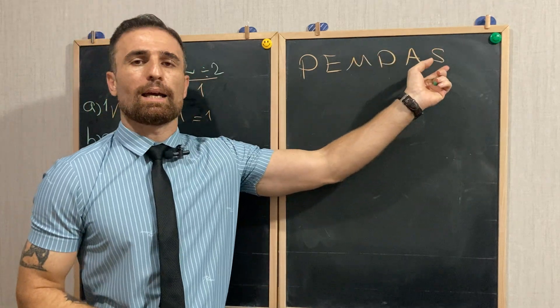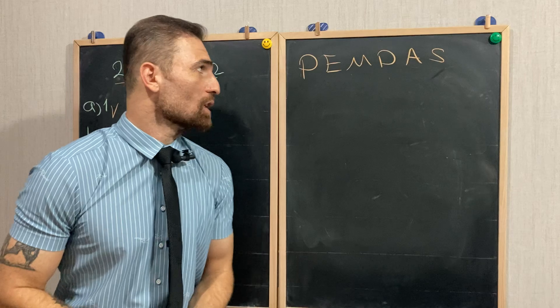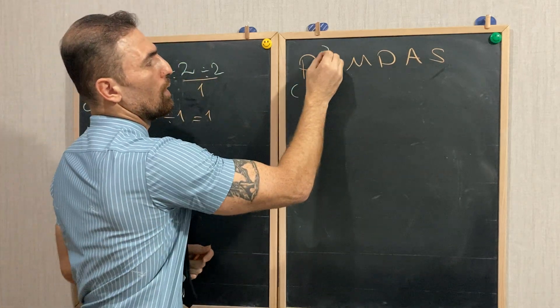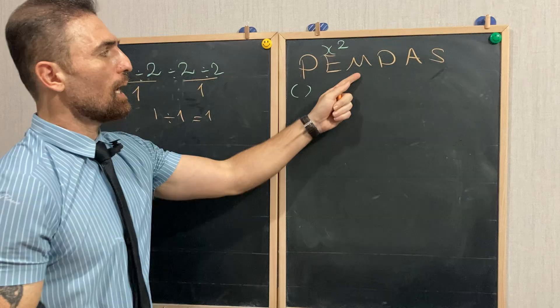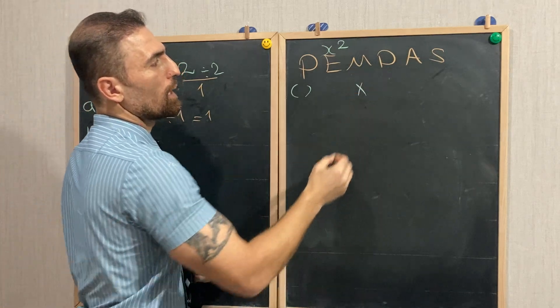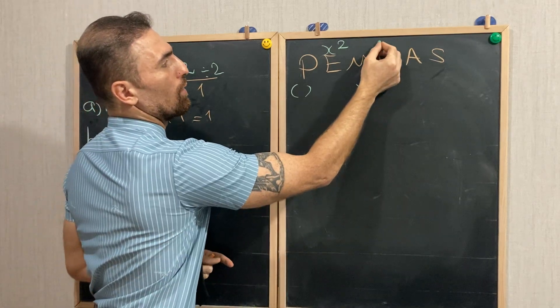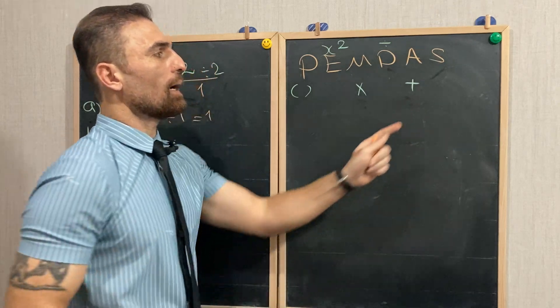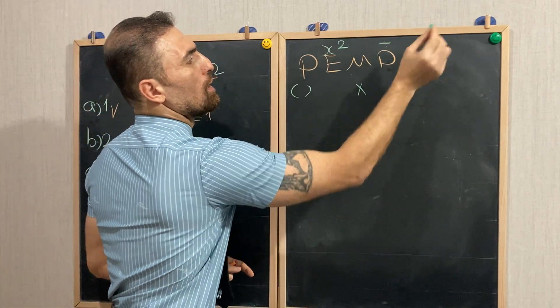Each letter stands for a different operation. P stands for parentheses, E stands for exponent, M stands for multiplication, D stands for division, A stands for addition, and S stands for subtraction.